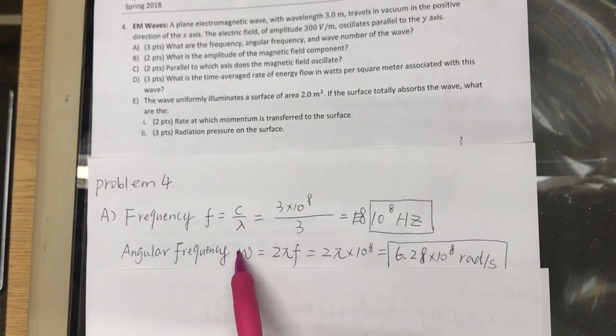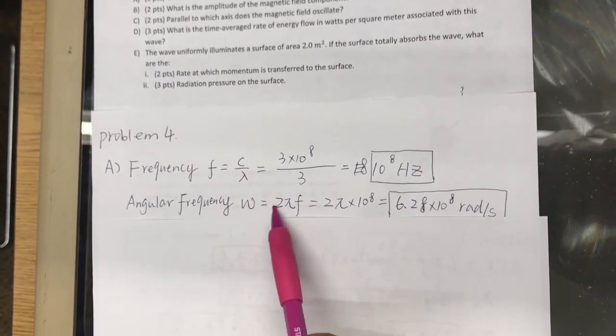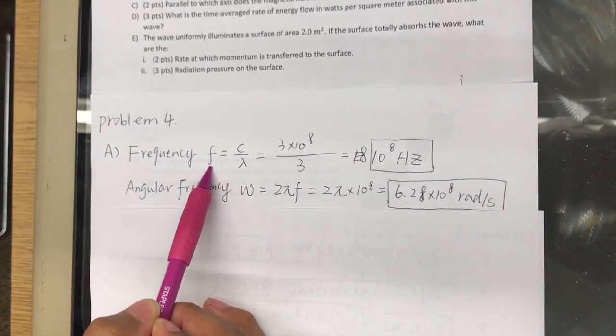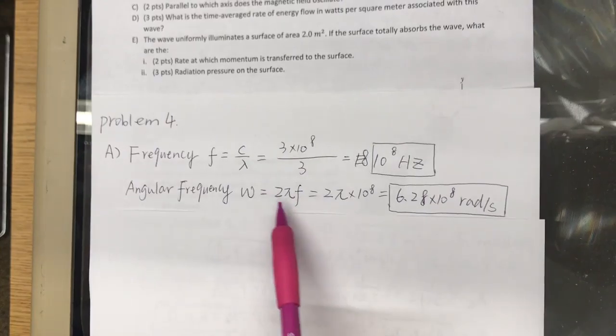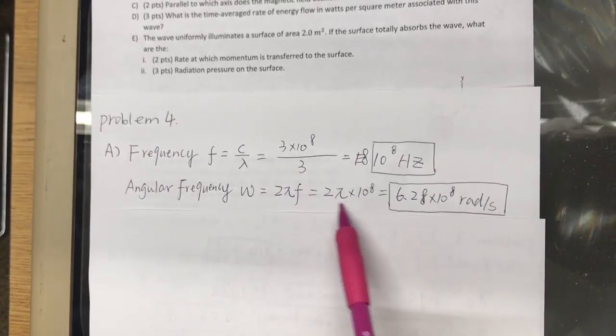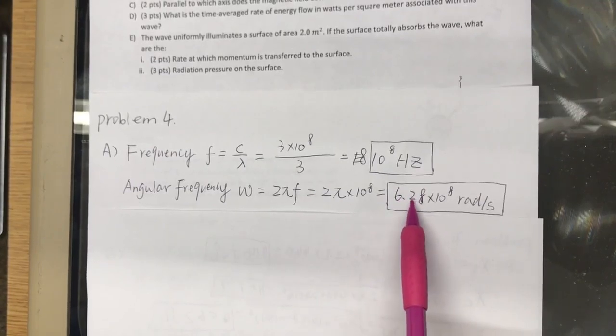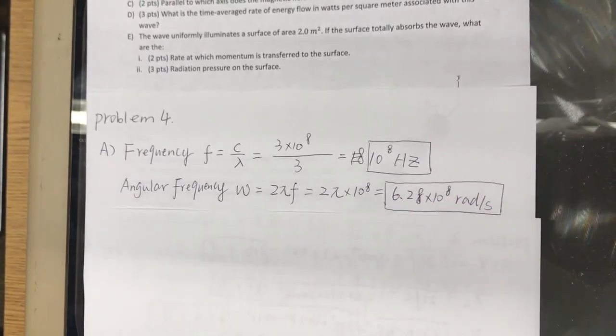Angular frequency, of course, angular frequency equals 2 pi times the frequency. Again, we calculated the frequency from the previous equation, and we multiply by 2 pi. 2 pi times 10 to the 8th, that gives us 6.28 times 10 to the 8th radians per second.